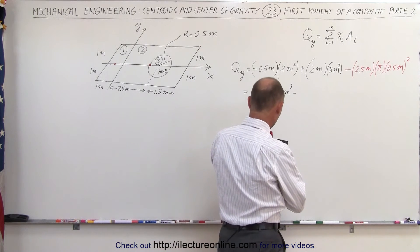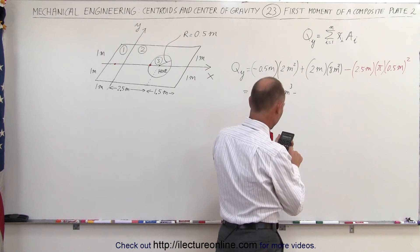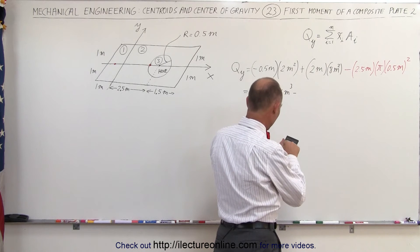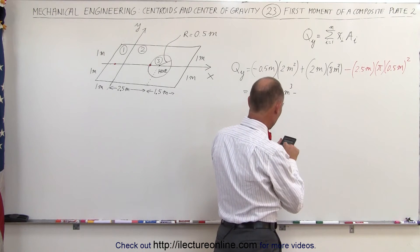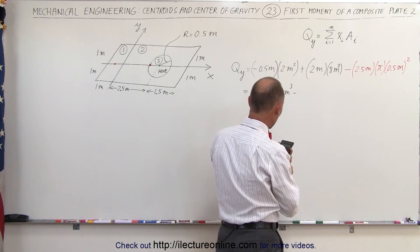So 0.5 squared times 2.5 times pi equals, that would be 1.96.